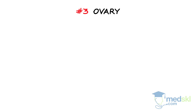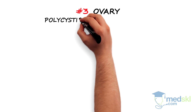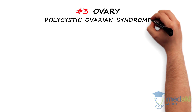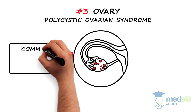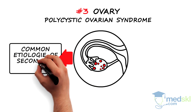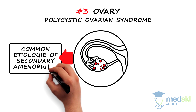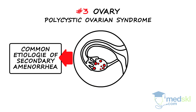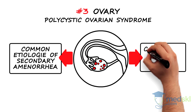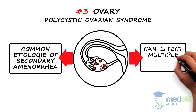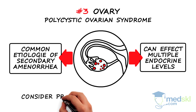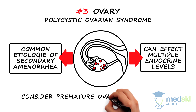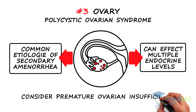Number 3: Ovary. Polycystic ovarian syndrome can be considered an ovarian cause and is one of the most common etiologies of secondary amenorrhea. However, PCOS is a complex disorder and can affect multiple endocrine levels. For those wishing fertility, premature ovarian insufficiency must also be considered.